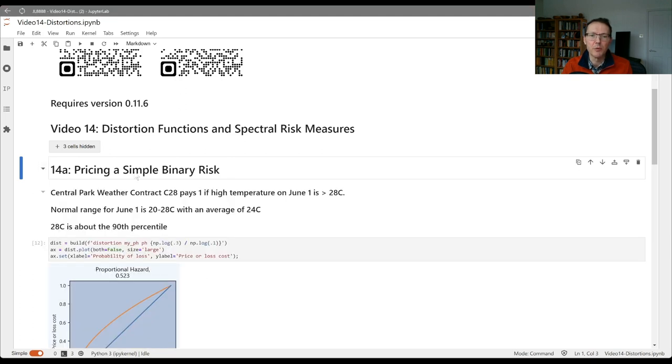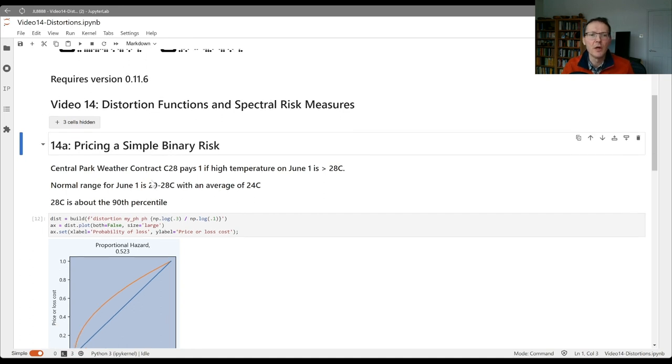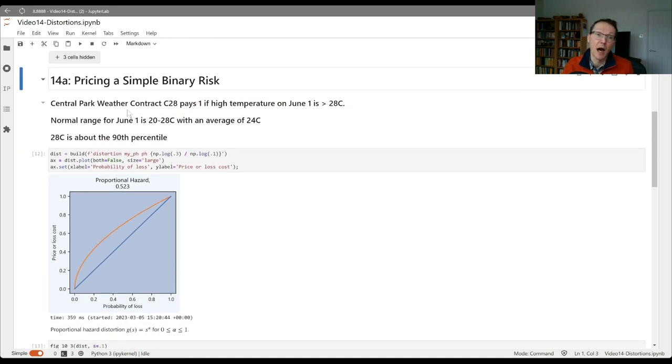We're going back to the simple binary risks that we introduced in the first talk. That was a contract on the high temperature in a given day in Central Park. We considered a contract which paid one if that high temperature was above 28 degrees centigrade. That contract had a loss cost of about 10 percent, and we set up a pricing model which corresponded to a price of 30 cents for that risk. We used a distortion function, this orange function here that goes from 0.0 to 1.1, an increasing concave function that priced a whole slew of these contracts with different strike prices characterized by their probability of loss.